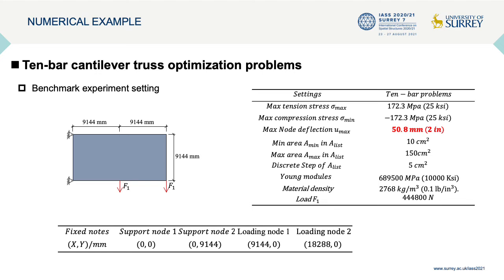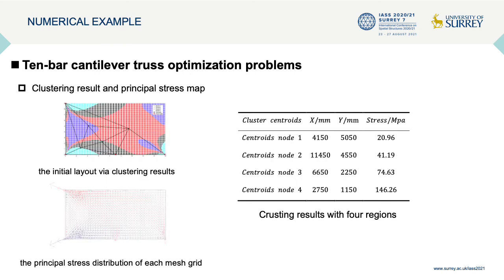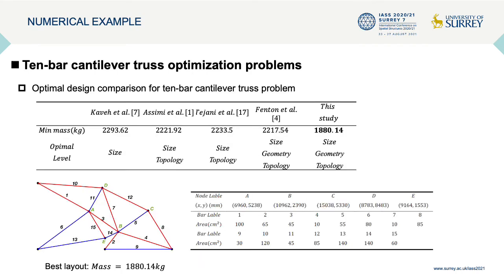The 10-bar continual truss optimization problem is tested in this paper. The experiment is implemented by MATLAB, including clustering, simulated annealing, and structural analysis. The result of the FEM method shows the clustering result and the principal stress distribution. Compared with previously published results, the proposed method can generate better solutions as shown in the table. The best layout is shown in the figure — the red edge represents bars in tension and the blue one represents bars in compression, and detailed information can be found in the table.